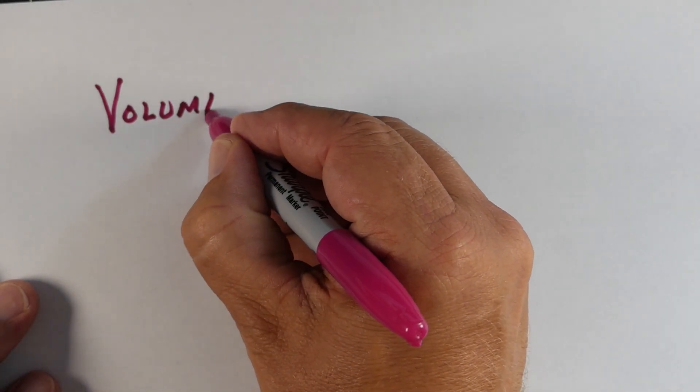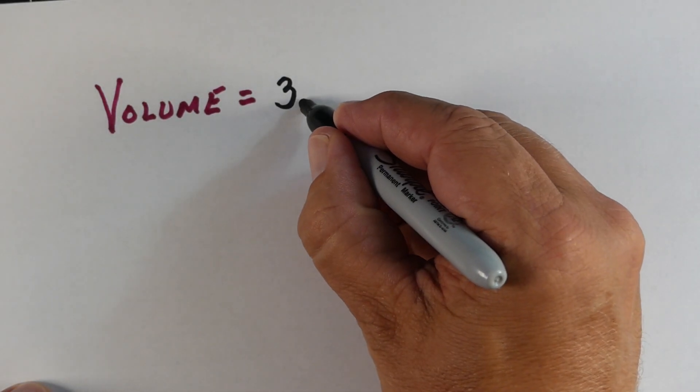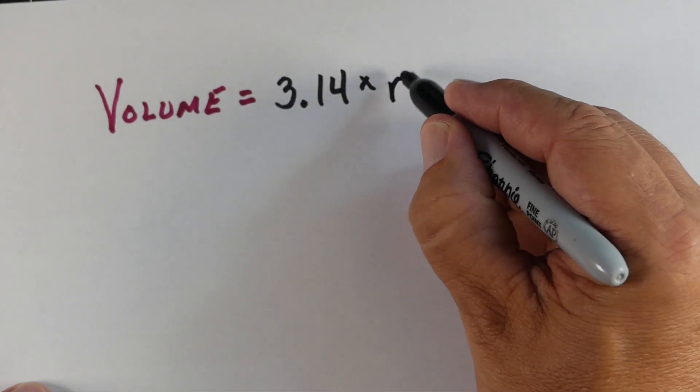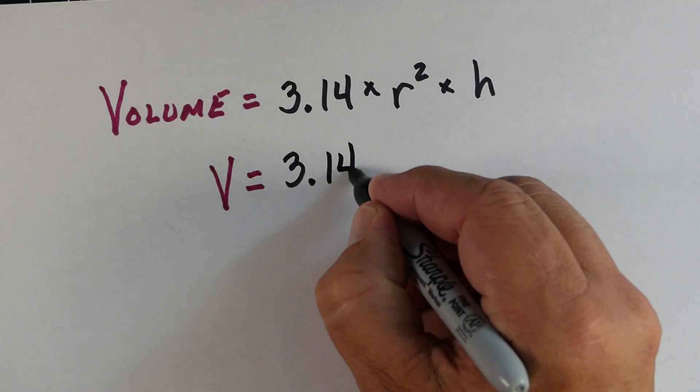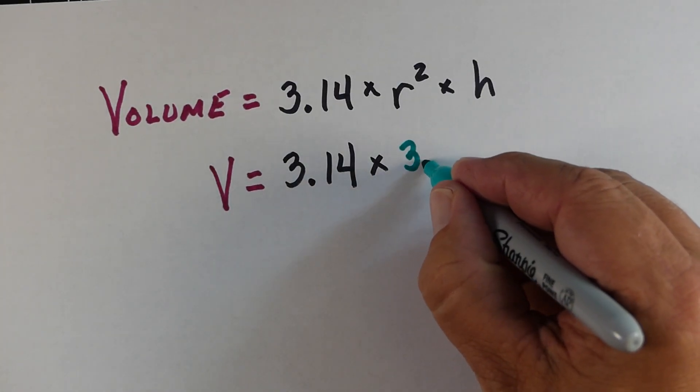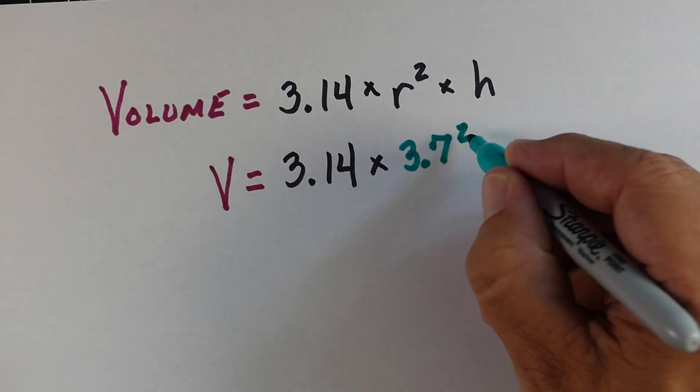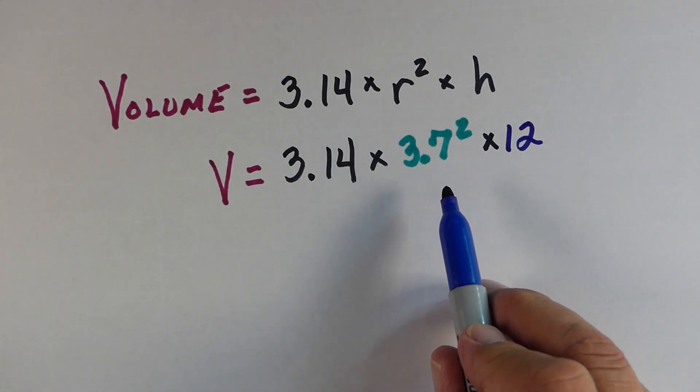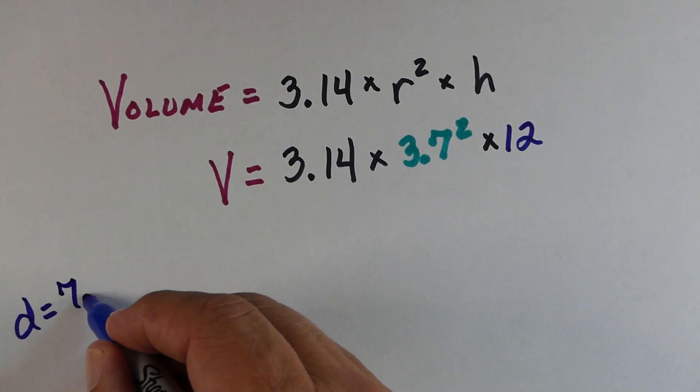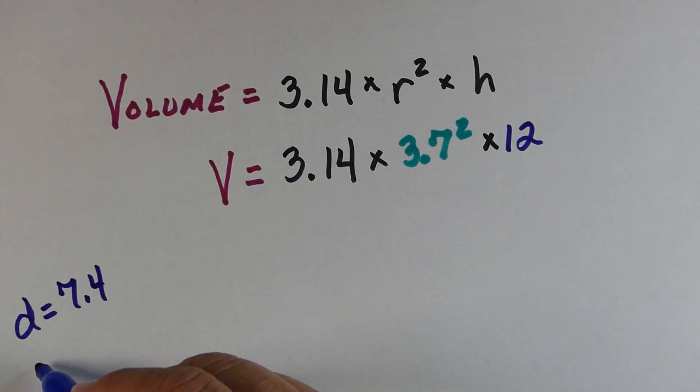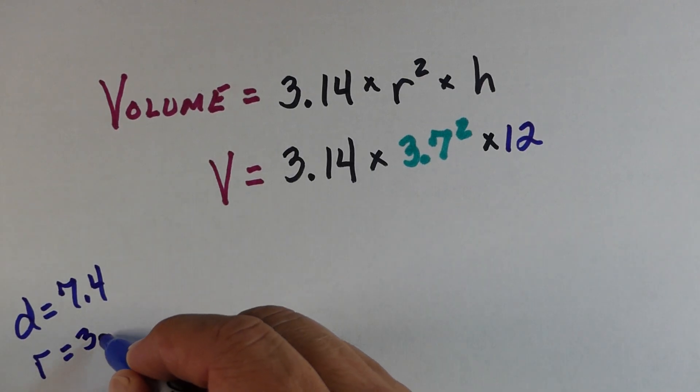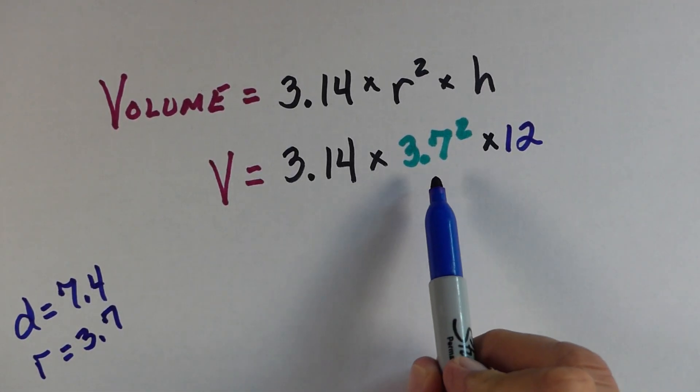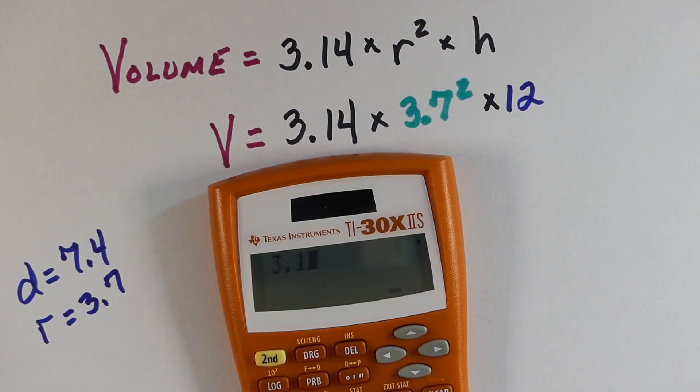So, to get the volume, we're gonna take pi, which again is 3.14, and we're gonna multiply it by the radius squared times height. Now, we need to get the radius squared. So, we have pi, 3.14 times 3.7 squared times 12. Now, you might ask, where did you get the 3.7? Well, the diameter is 7.4. The radius is half the distance across the circle, so we just cut that in half and got 3.7. So, we'll square that. So, in our handy-dandy calculator, I'll go 3.14 times 3.7 squared, and then times 12, because that was our height.